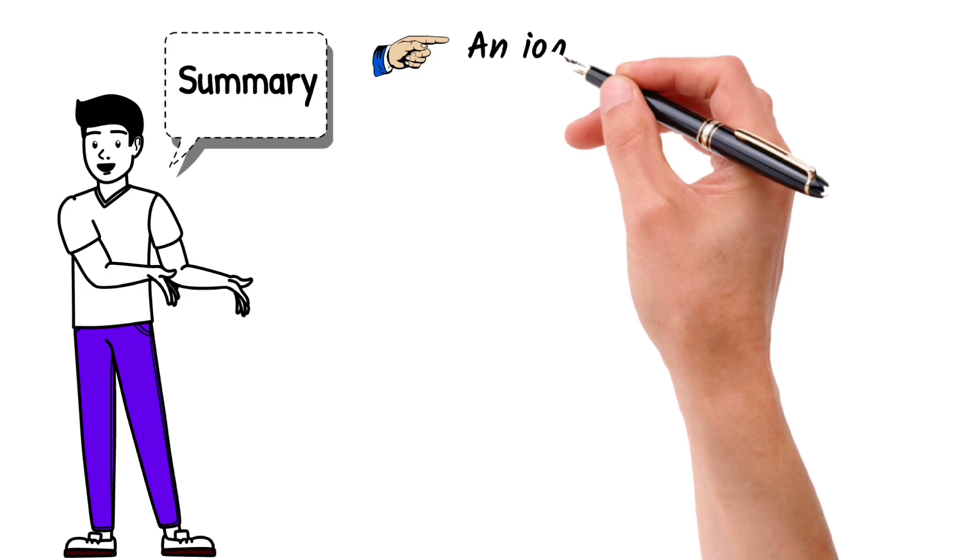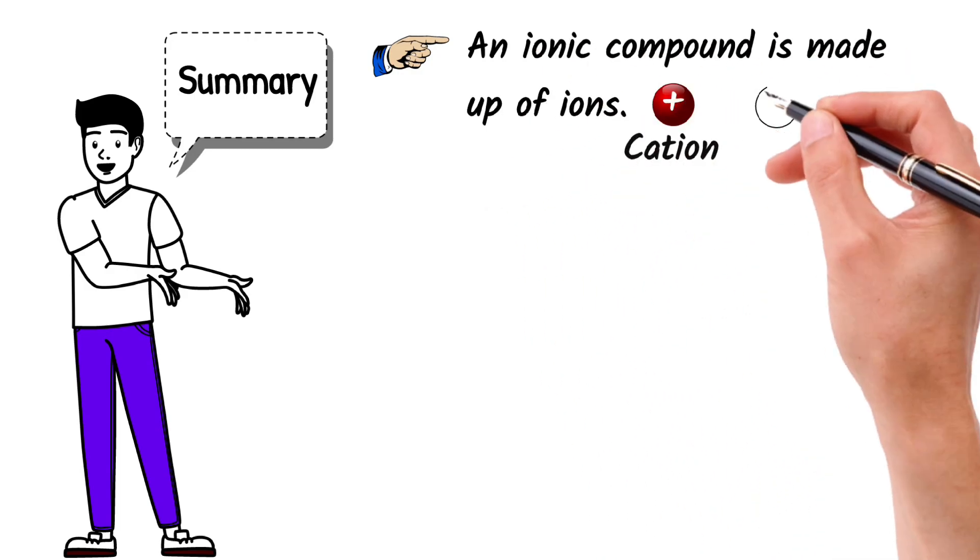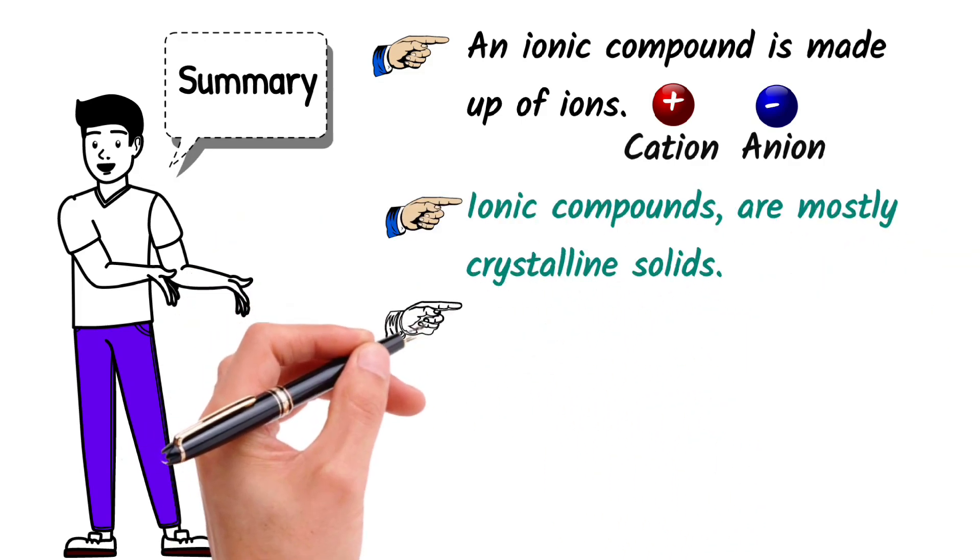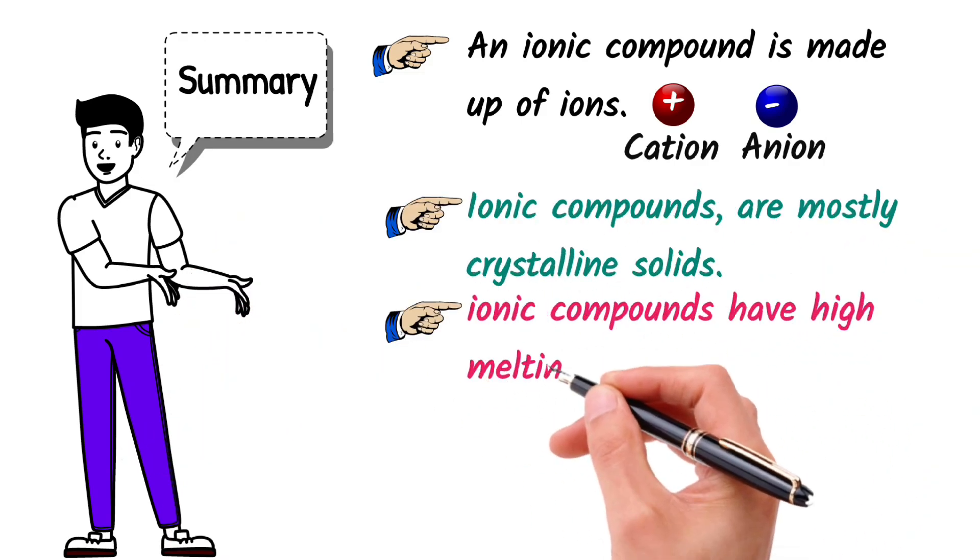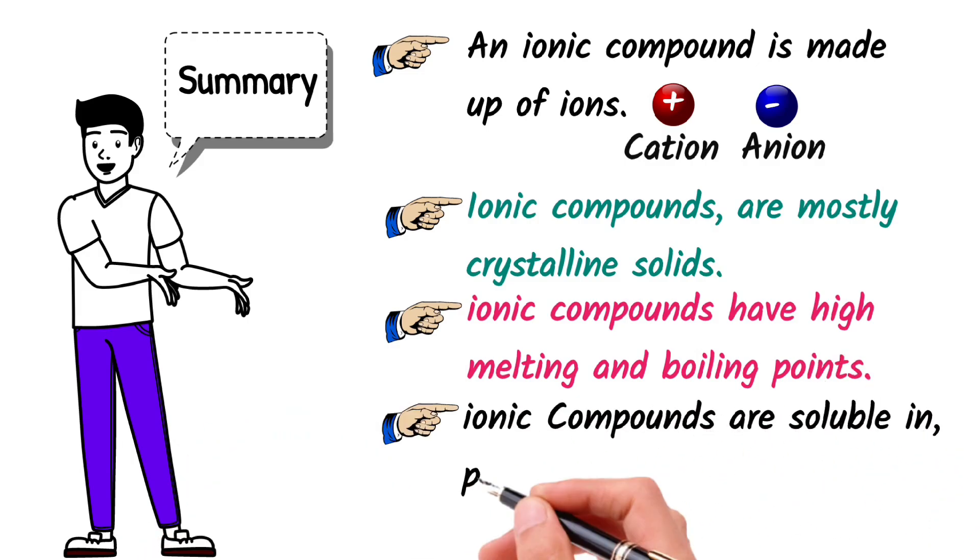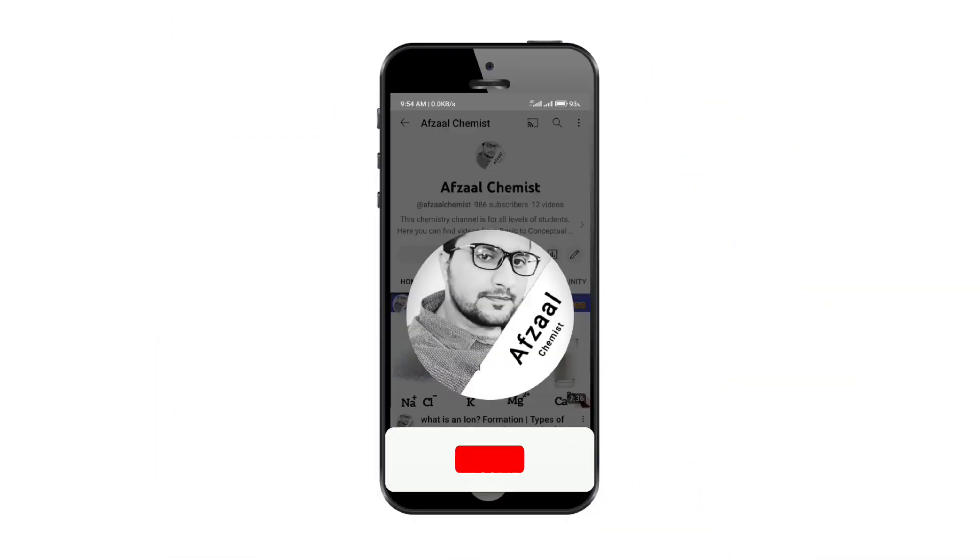An ionic compound is made up of ions: positively charged cations and negatively charged anions. Ionic compounds are mostly crystalline solids. Ionic compounds have high melting and boiling points. Ionic compounds are soluble in polar solvents like water, but they are insoluble in organic solvents.